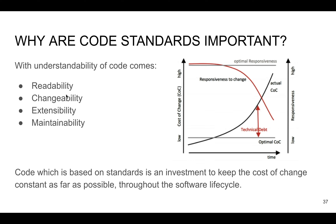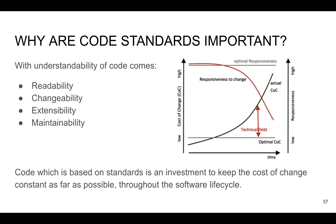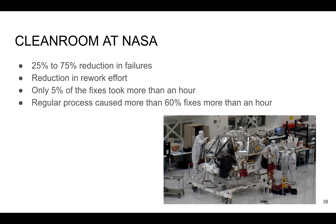Following clean code requirements increases readability, tangibility, extensibility, and maintainability of our code. We need to remember that code based on a standard is an investment to keep the cost of change as constant as possible throughout the software life cycle. Since that life cycle can span many years, future developers will maintain your code, and having documentation describing code conventions and standards decreases errors and increases the number of fixed bugs in shorter time.